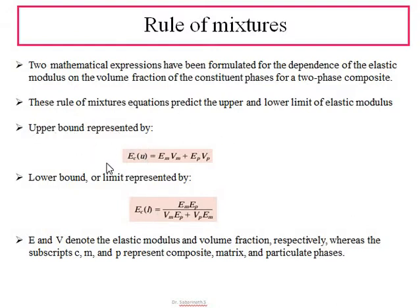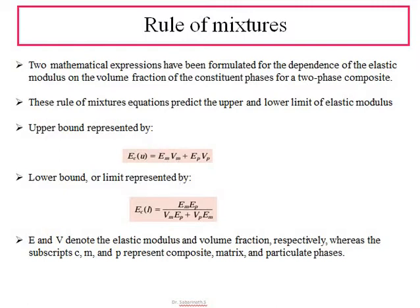The upper bound of the elastic modulus of the composite is evaluated by: E_upper = E_m·V_m + E_p·V_p. The lower bound is calculated using a separate equation. This rule of mixtures is very important for calculating the elastic modulus and its dependence on the elastic moduli and volume fractions of the constituent phases.